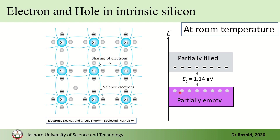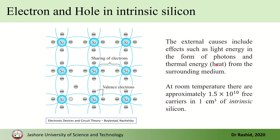At room temperature, some electrons jump from the valence band to the conduction band, making a hole — a void space — where the electron used to be. This means at room temperature some electrons have enough energy to overcome the band gap barrier. This excitation can be due to heat or light. In intrinsic silicon there are approximately 15 billion free carriers per cubic centimeter at room temperature.